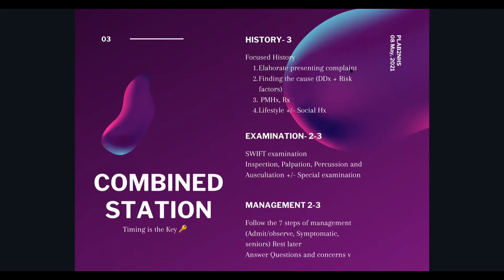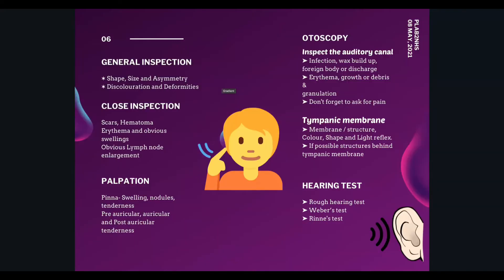Before starting otoscopy, hold the otoscope like a pen between your index finger and thumb, resting the handle near your hand. Always start with the normal ear first, then proceed to the abnormal ear. During the stress of an exam you may forget which ear is affected, so always cross-check before proceeding.